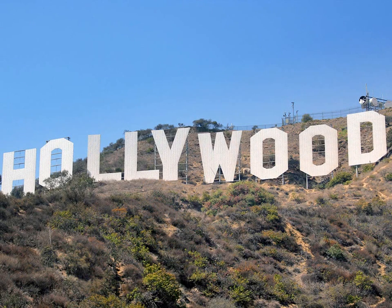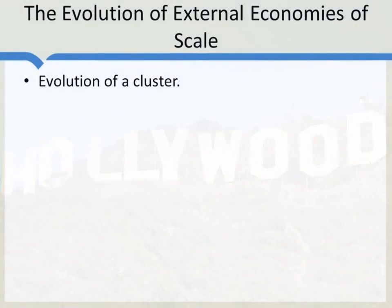Here's another cluster with which you're very familiar: Hollywood. Why is it that so many movies, not just in the United States but for the world, are made in Hollywood? And if they're not made in Hollywood, they're probably made in another industrial cluster — Bollywood, in India. In order to understand why some industries cluster, it's useful to think about how a cluster evolves. And these principles have repeated themselves over and over again in many different types of industries.